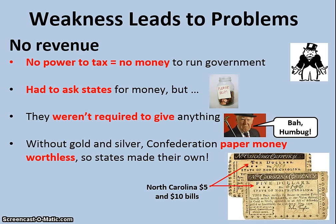Also, the system of mercantilism had left the United States with a shortage of hard gold and silver currency. So the confederation government printed paper money, but without gold and silver to back it up, this money was almost worthless, and the states began to make their own. Here we see examples of $5 and $10 bills printed by the state of North Carolina — different types of currency in circulation, both continental and individual state currencies.